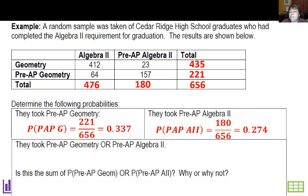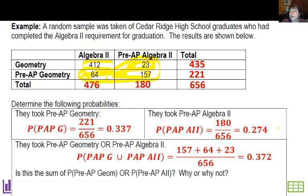Now if I wanted to know the probability they took pre-AP geometry or pre-AP Algebra 2, that would be this group right here, pre-AP geometry or pre-AP Algebra 2, right there. So that yellow group right there. So it's these three numbers, and basically if I add them up, 157 plus 64 plus 23 and then divide by 656, I get 0.372.